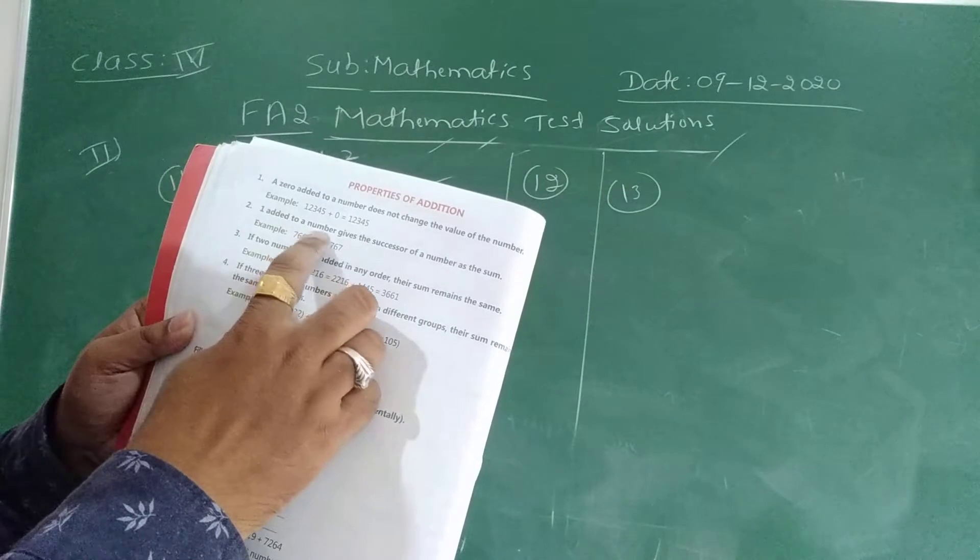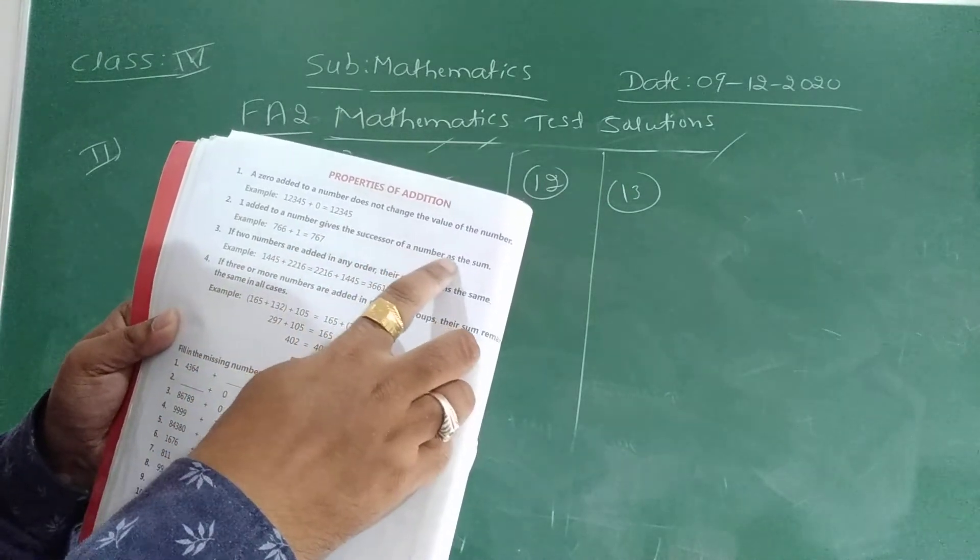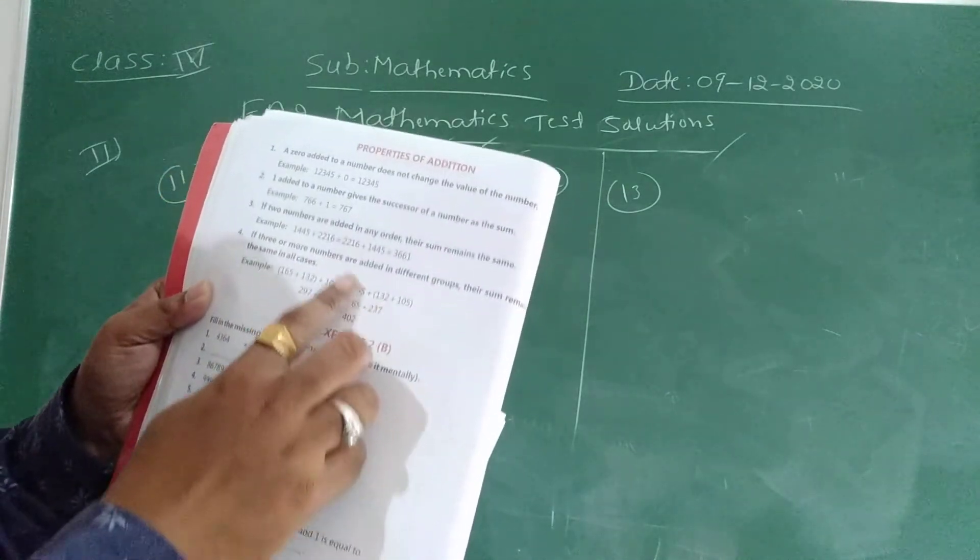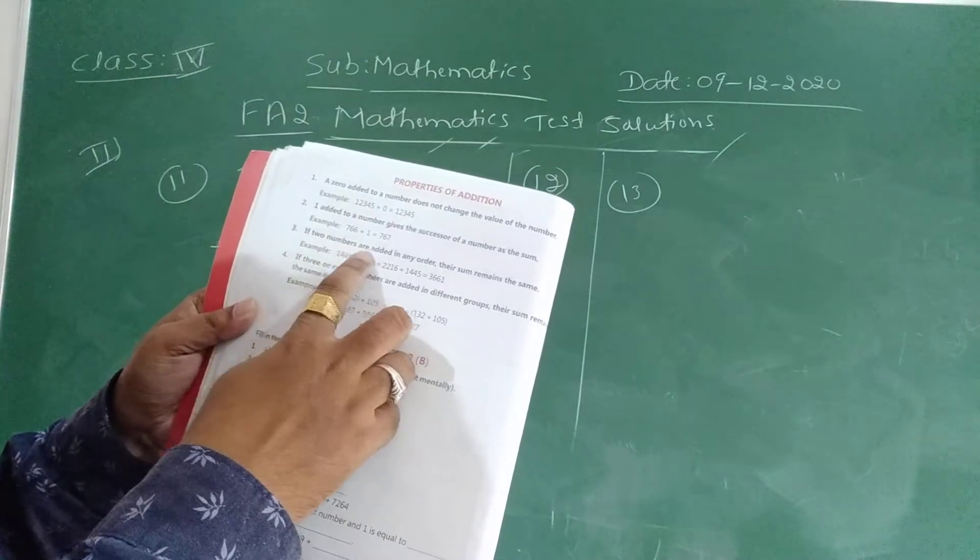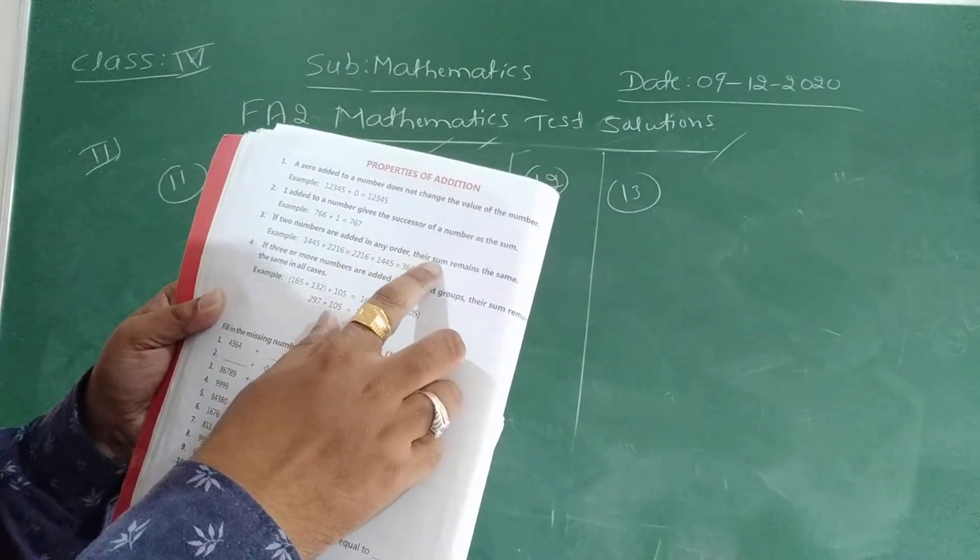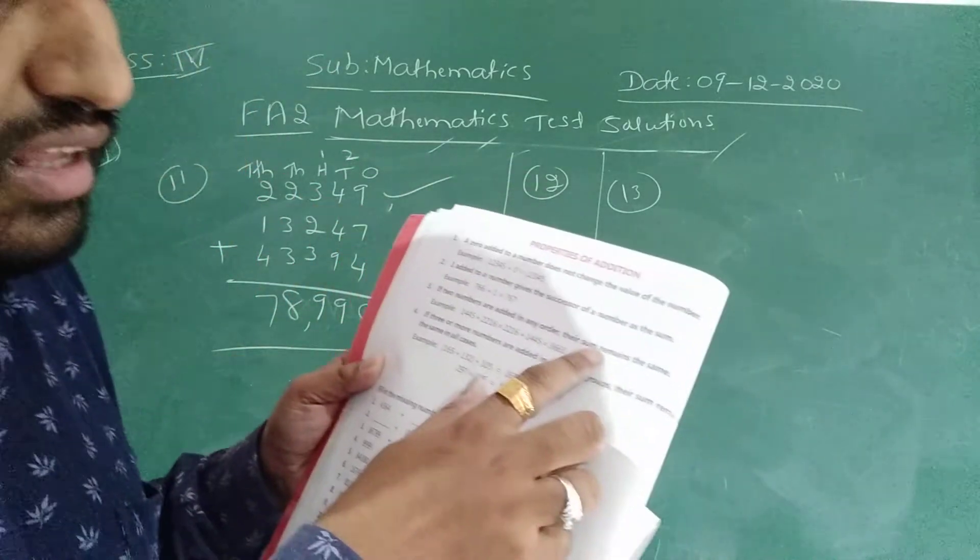Second property is 1 added to a number gives the successor of a number as the sum. Third one is if 2 numbers are added in any order their sum remains the same.